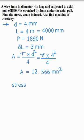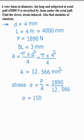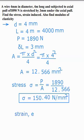Next, stress. Stress is denoted by sigma. Sigma is equal to P by A, that is 1890 N divided by area 12.566 mm squared. From this relation, the stress is equal to 150.40 N per mm squared.